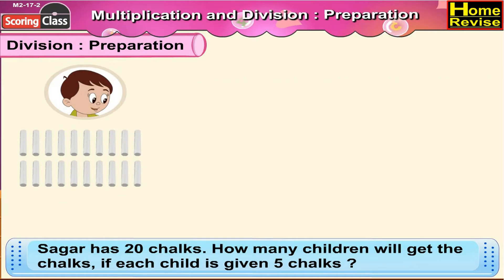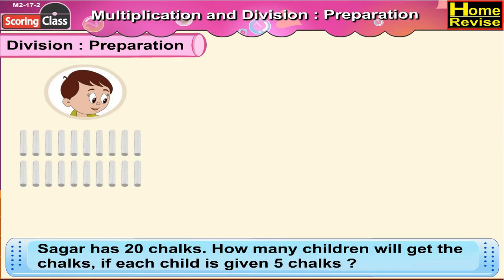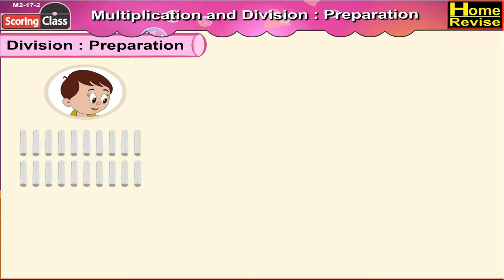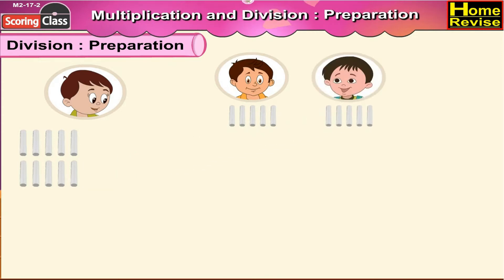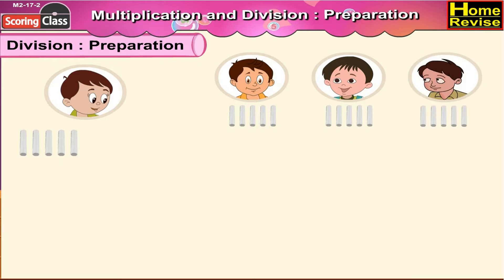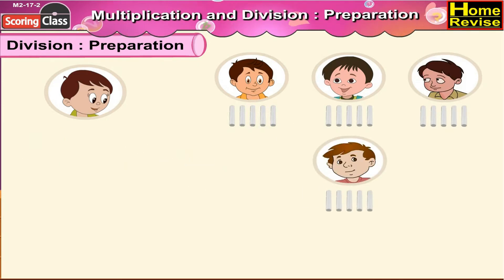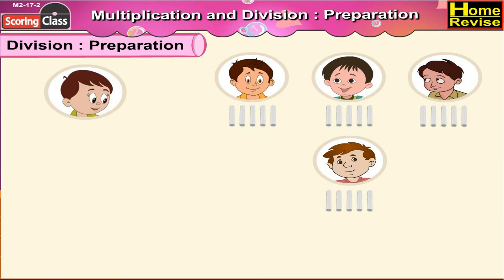Sagar has twenty chocks. How many children will get the chocks if each child is given five chocks? Now, Sagar has twenty chocks. He distributes five out of these to the first child, then five chocks to the second child, five chocks to the third child, and the remaining five to the fourth child. Chocks are finished. He has distributed all the twenty chocks.